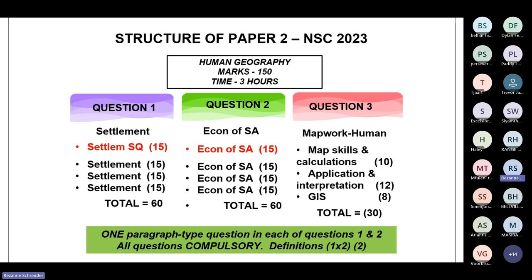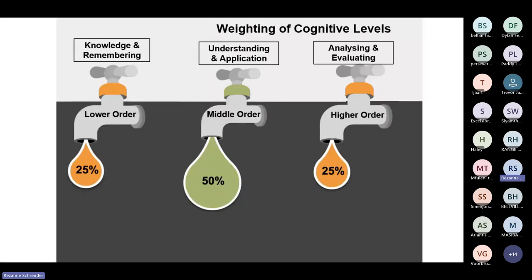What I'm going to do next is go over the structure of the papers and how geography exam setters look at the content and decide how to test learners. I'm hoping that after today we will be able to get into the minds of those examiners. Every single exam paper consists of 25% lower order, middle order — understanding and application — and then higher order questions like paragraph questions where you have to analyze and evaluate.